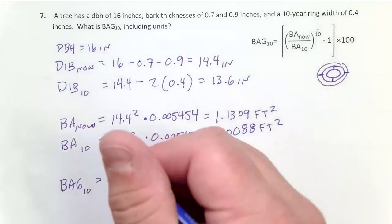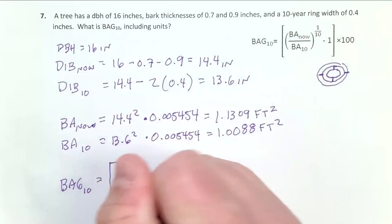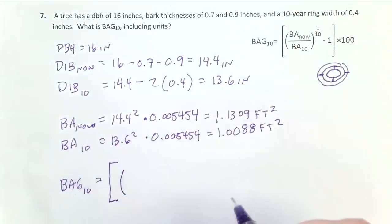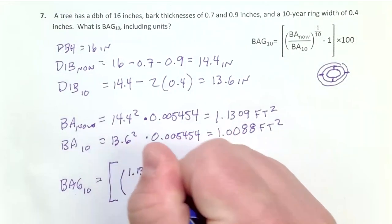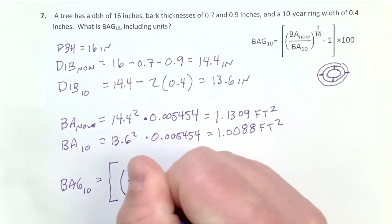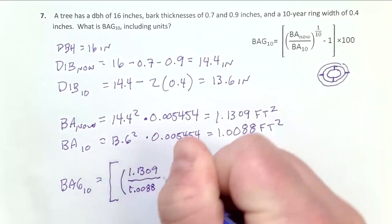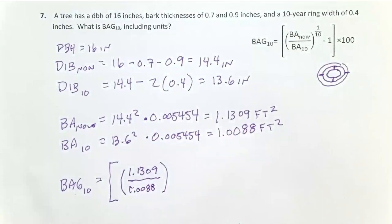And so we can start here with our fraction: 1.1309 divided by 1.0088. That's the first step in order of operations.